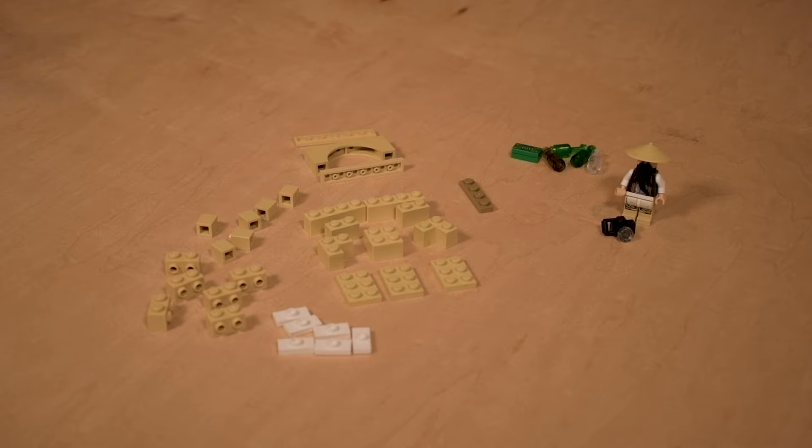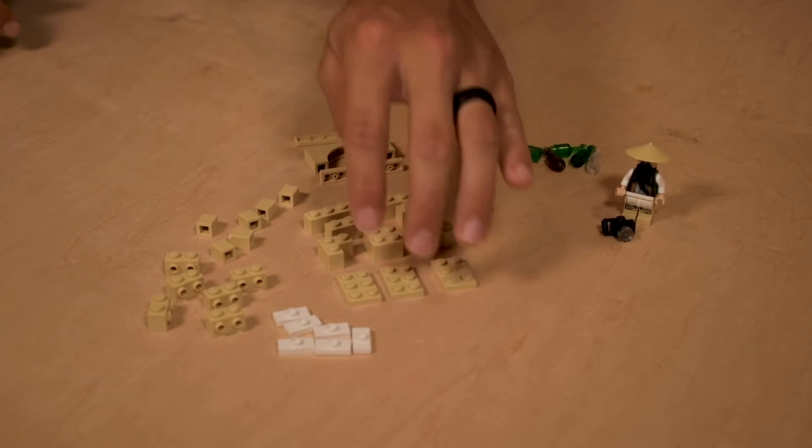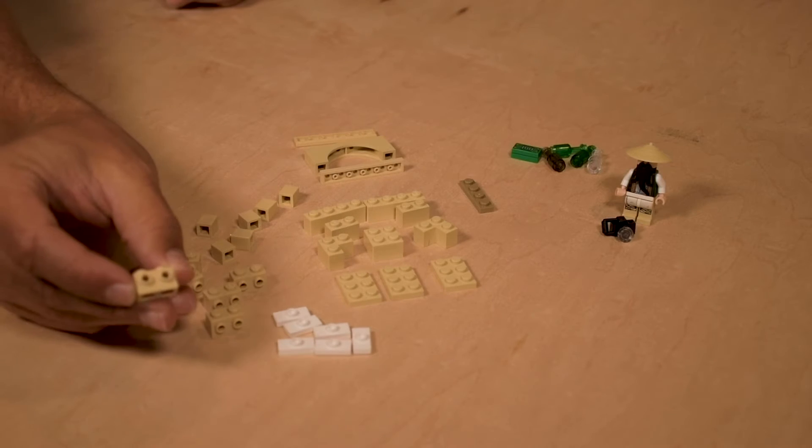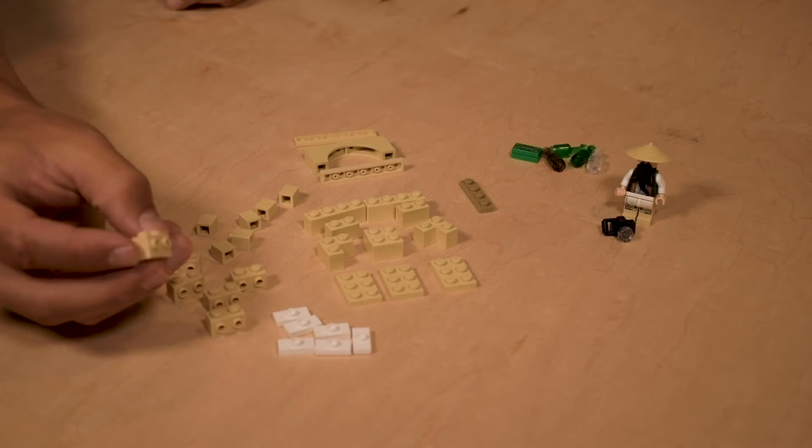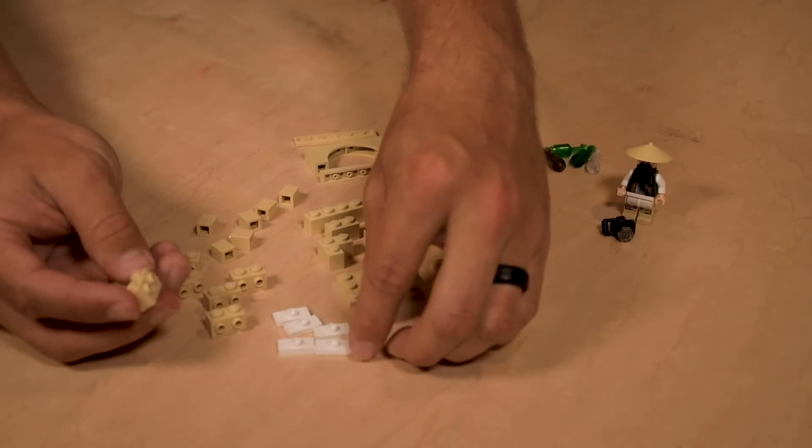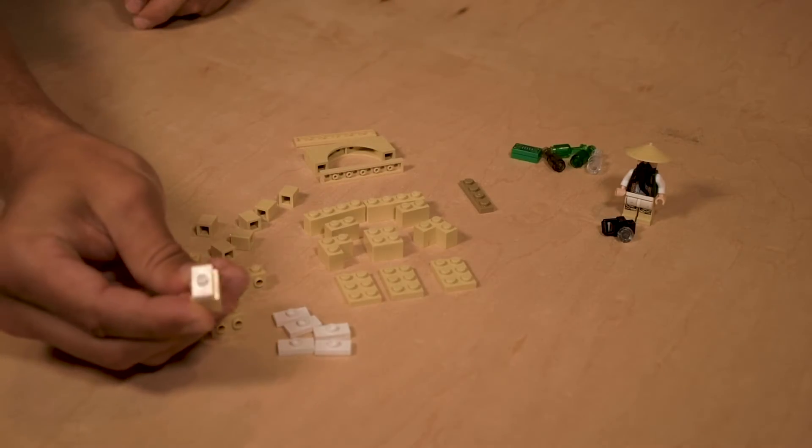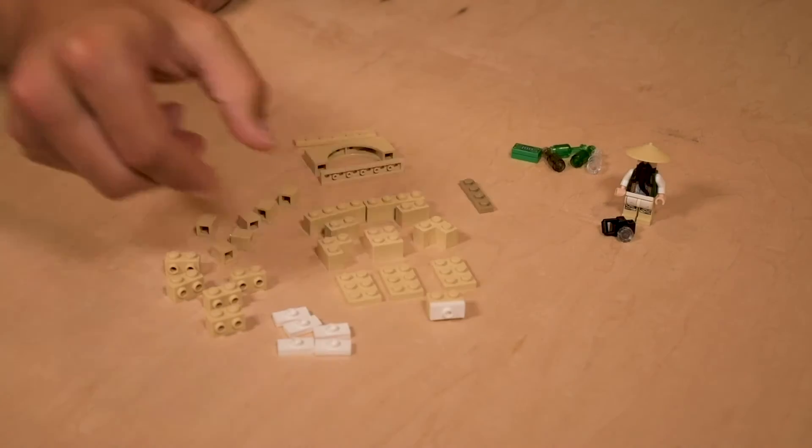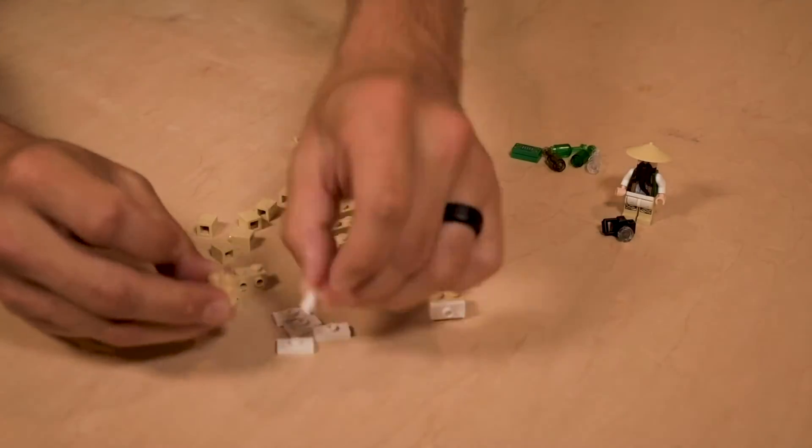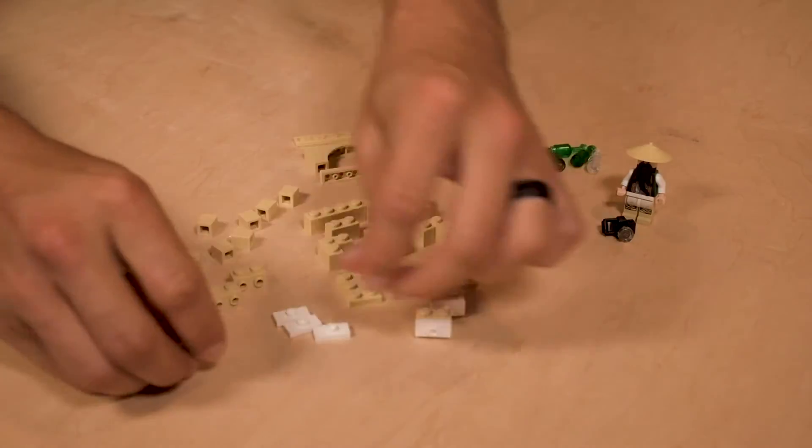So without further ado, let's get started building this. The first thing I want to do is take six of these little one by twos with the knobs on front and I'm going to toss on the little one by two plate with knob in the middle. I'm going to do that six times, just like in your LEGO instruction books, times six.